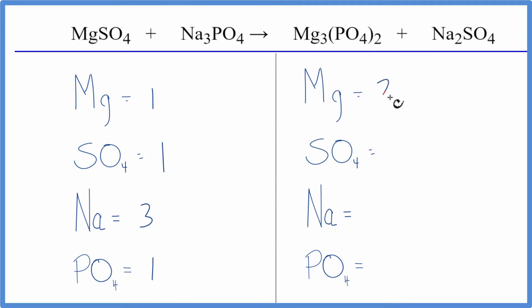On the product side, we have three magnesiums, one sulfate ion, two sodiums, and then the phosphate PO4, we have one times two, so we have two phosphates.